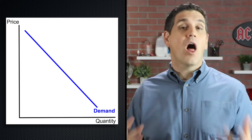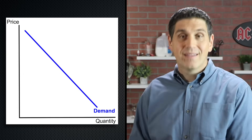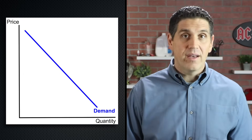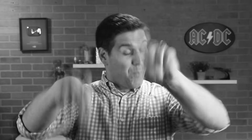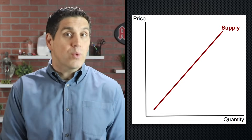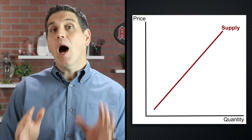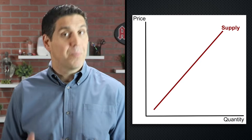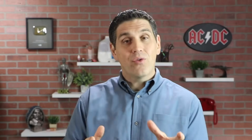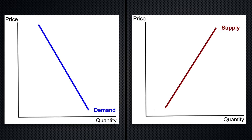So you've already learned the law of demand — the idea there's an inverse relationship between price and quantity, showing you a downward sloping demand curve. And you've already learned the law of supply, showing you a direct relationship between price and the quantity supplied, showing you an upward sloping supply curve. The whole idea of elasticity is to show you that the shape of these curves changes depending on the market and the product.